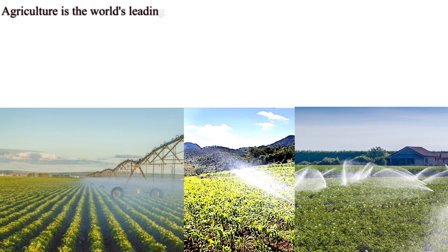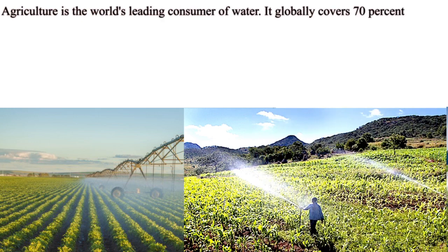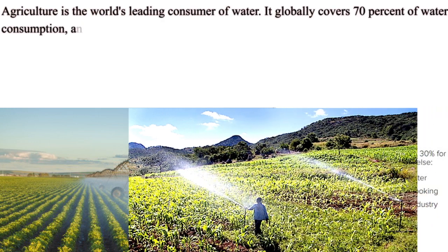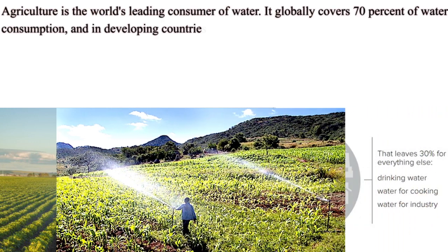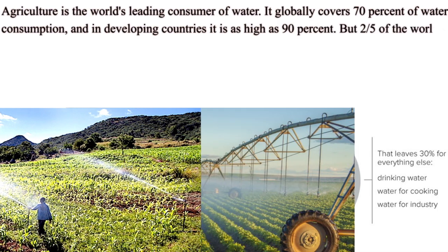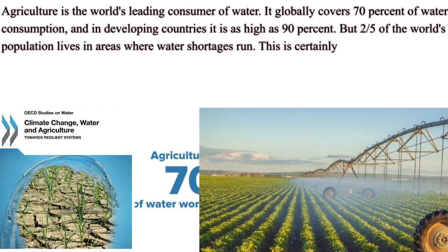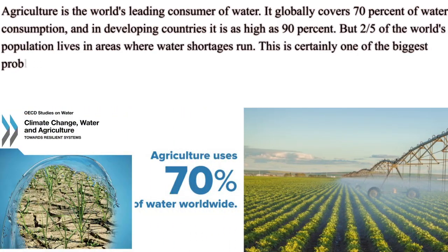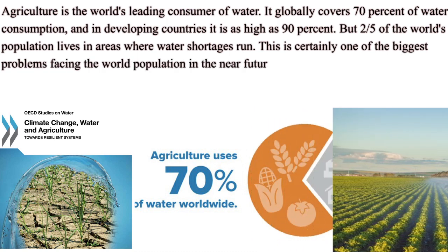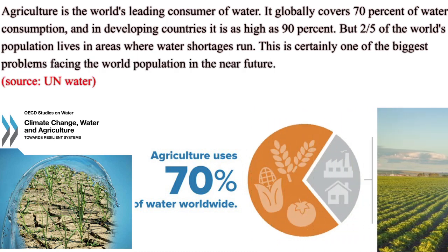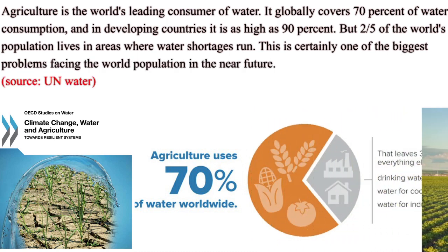Agriculture is the world's leading consumer of water. It globally covers 70% of water consumption, and in developing countries it is as high as 90%. But 25% of the world's population lives in areas where water shortages occur, which is certainly one of the biggest problems facing the world population in the near future.